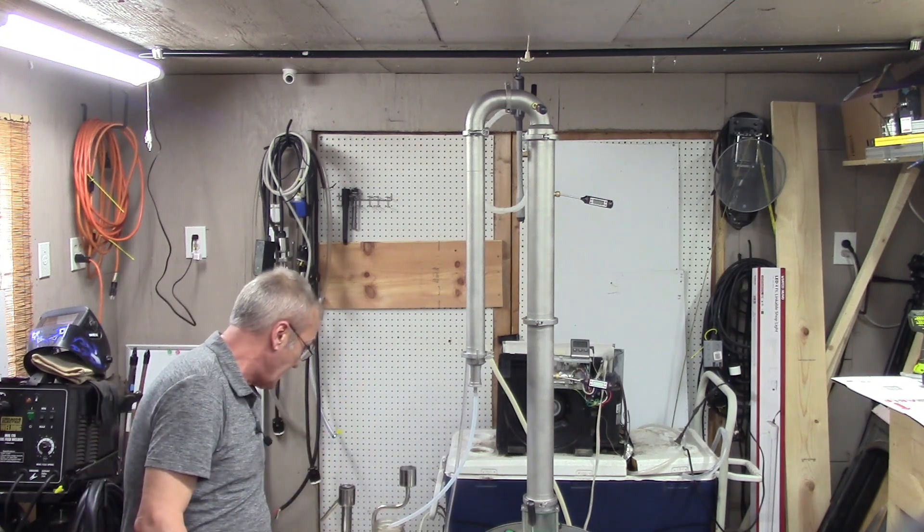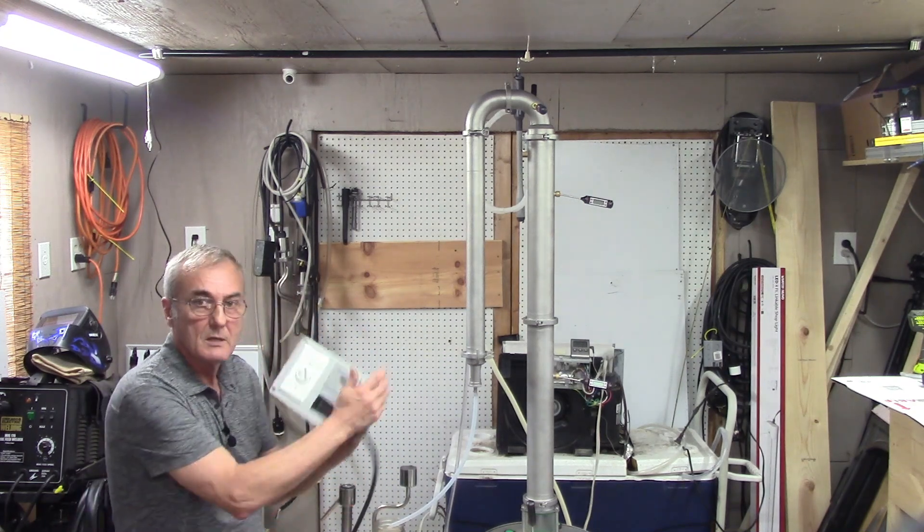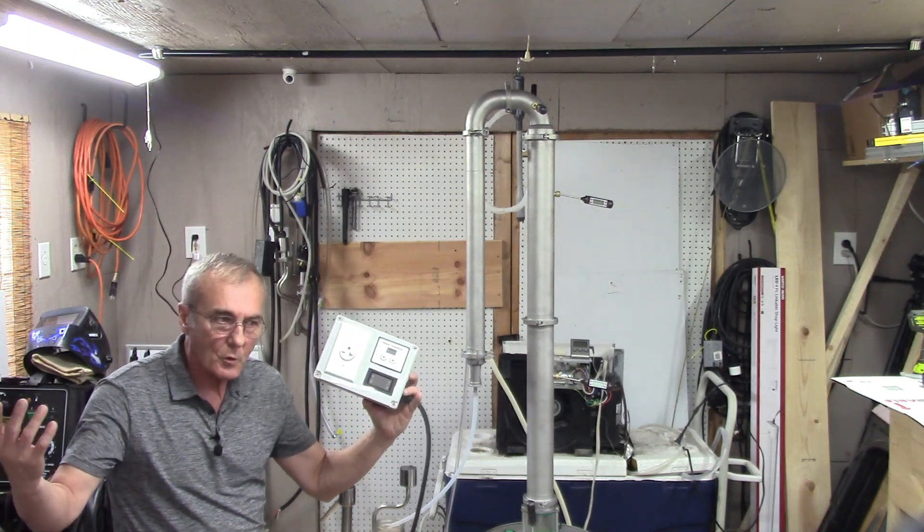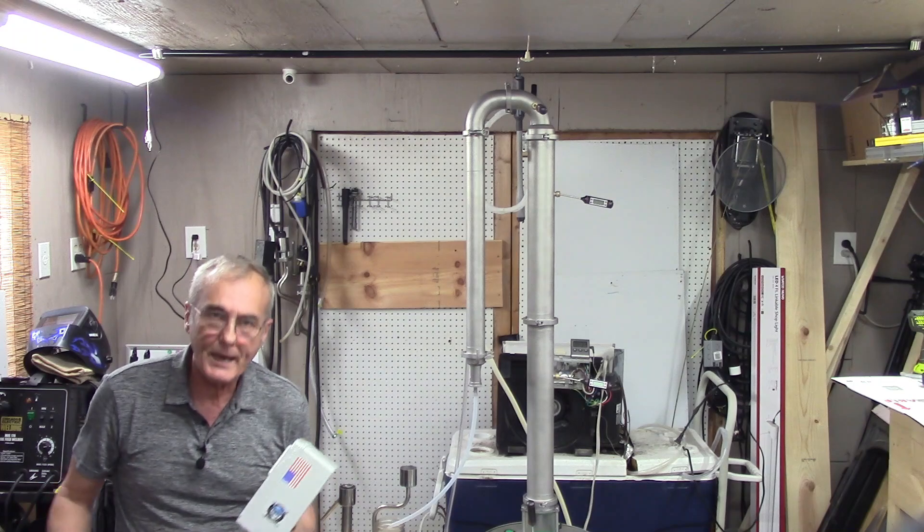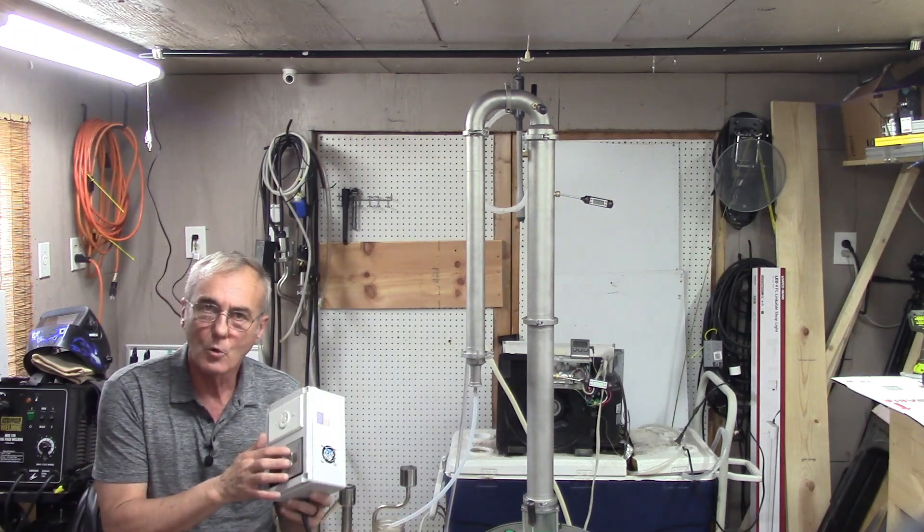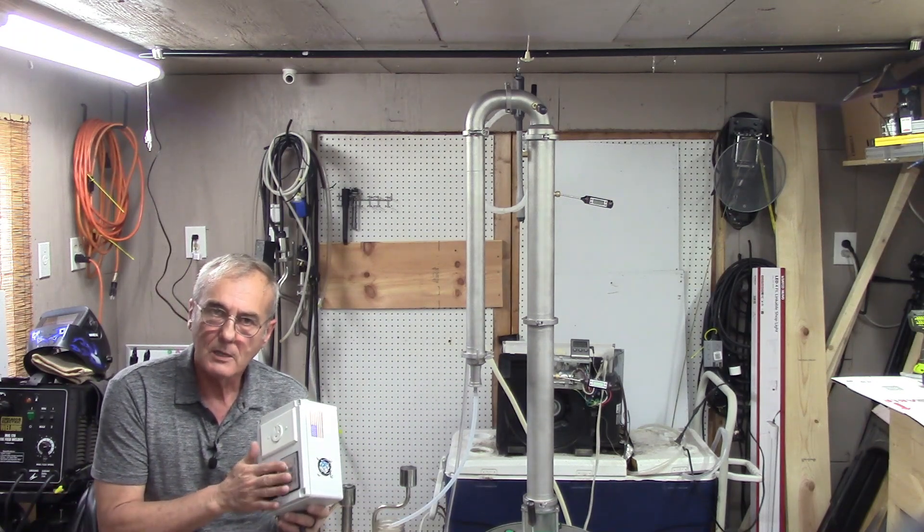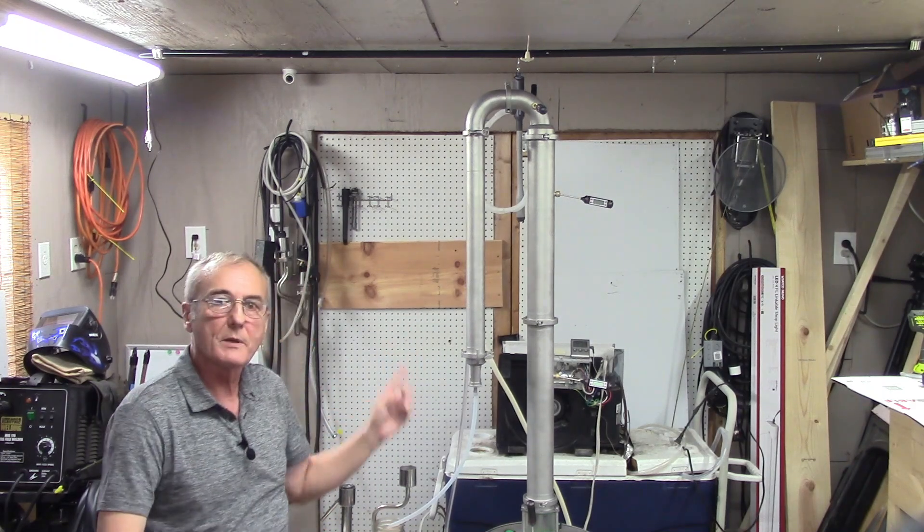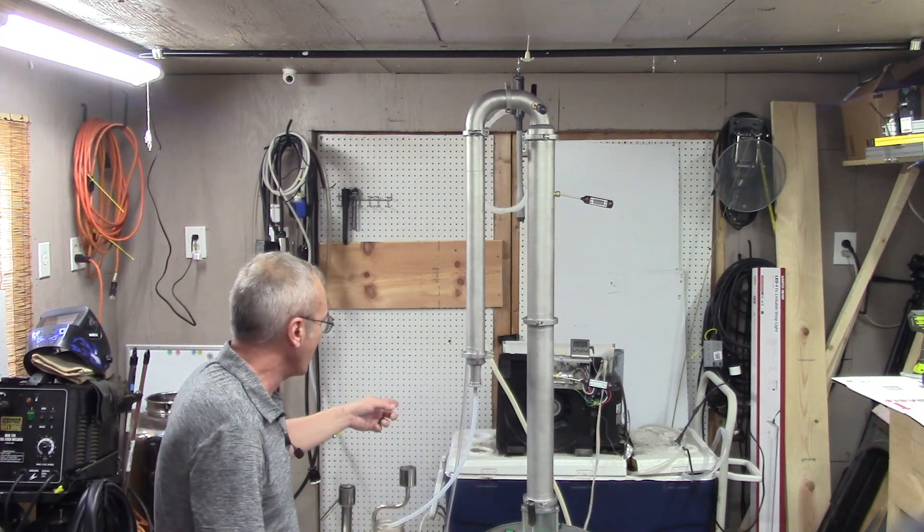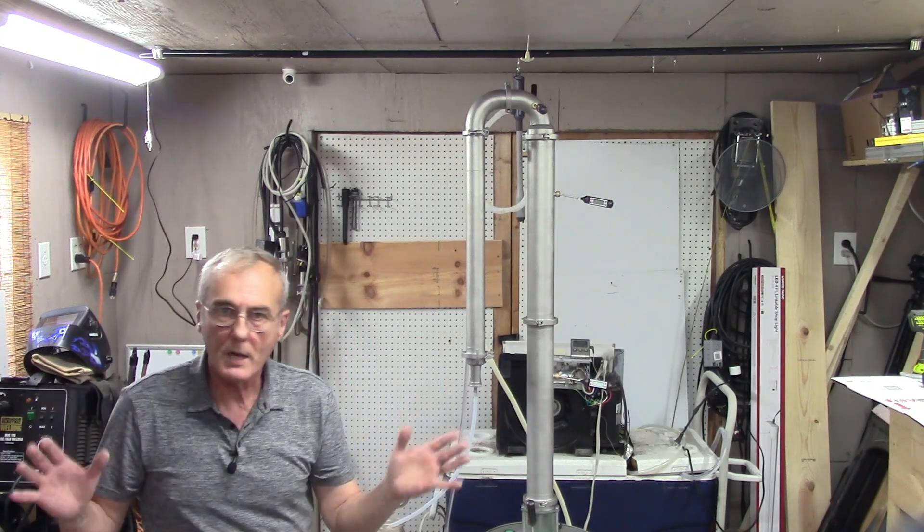So I'm going to use the pulse width modulator. I've got my 240-volt pulse width modulator because I'm running a 3,000-watt element in the kettle, and I'll be able to control the output by percentage. I've got that water chiller and I've had a lot of questions about it.